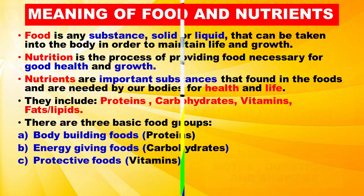Meaning of Food and Nutrients. Food is any substance, solid or liquid, that can be taken into the body in order to maintain life and growth. Nutrition is the process of providing food necessary for good health and growth. Nutrients are important substances found in foods that are needed by our bodies for health and life.